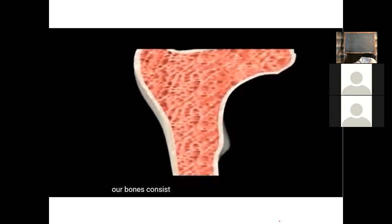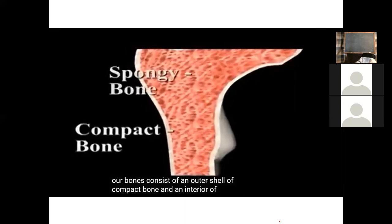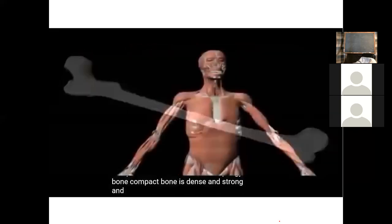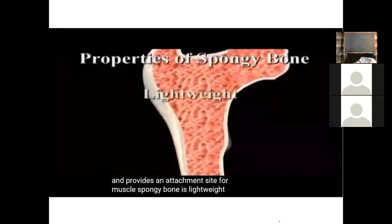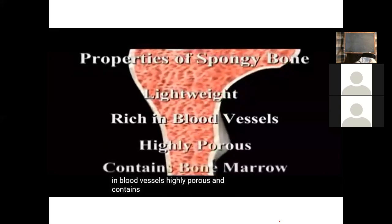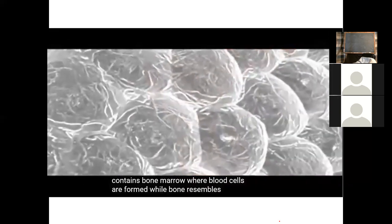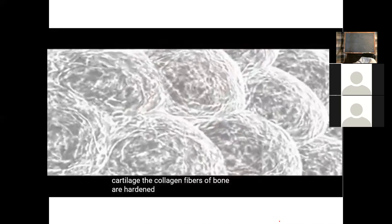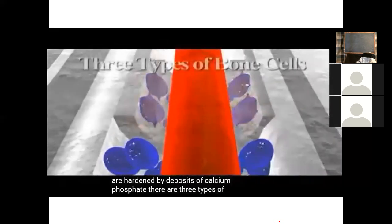Our bones consist of an outer shell of compact bone and an interior of spongy bone. Compact bone is dense and strong and provides an attachment site for muscle. Spongy bone is lightweight, rich in blood vessels, highly porous, and contains bone marrow where blood cells are formed. While bone resembles cartilage, the collagen fibers of bone are hardened by deposits of calcium phosphate. There are three types of bone cells: osteoblasts — bone forming cells; osteocytes — mature bone cells; and osteoclasts — bone dissolving cells.